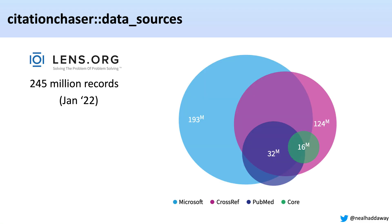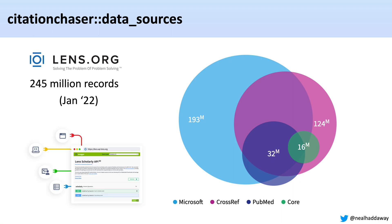We've used Lens.org, which is a free-to-use bibliographic meta-database. As of the start of 2022 it had 245 million records, mainly from Microsoft Academic Graph, a lot from Crossref, PubMed, and some from Core, and they're including more records — around six million from Open Alex right now as well. It's a very large database that looks across multiple bibliographic databases, and we're making use of the Scholarly API which allows us to interrogate its core database.